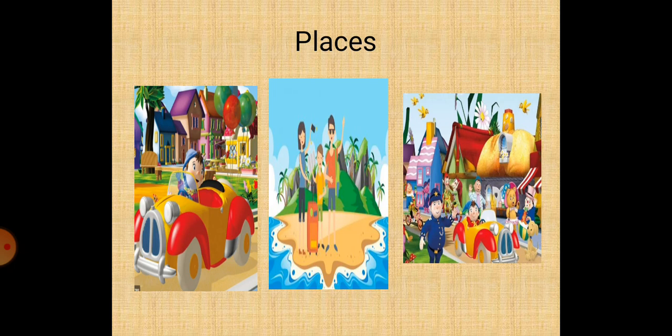Children, look at this place in the slides. You can see people in different places. Noddy is in the garden; here they are in the park; here some fair is going on. All these have a name, so it is called a noun.